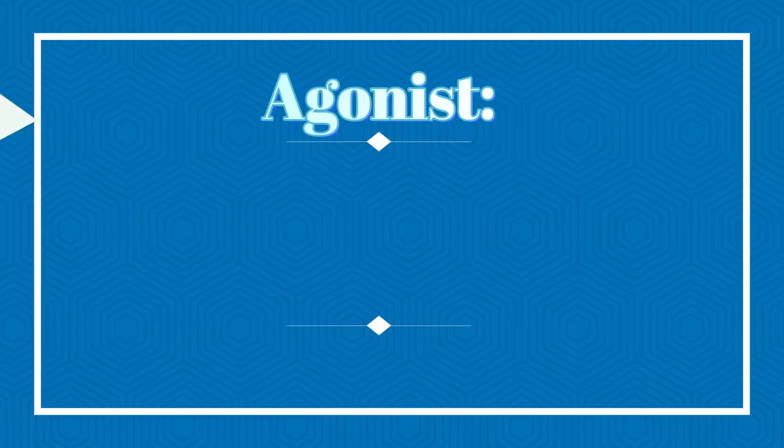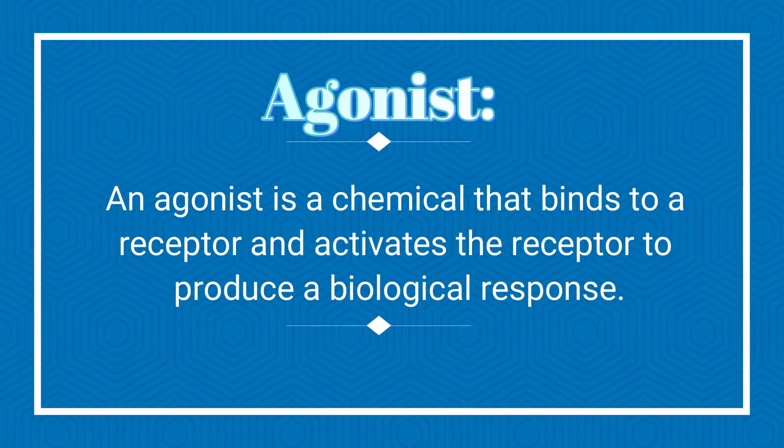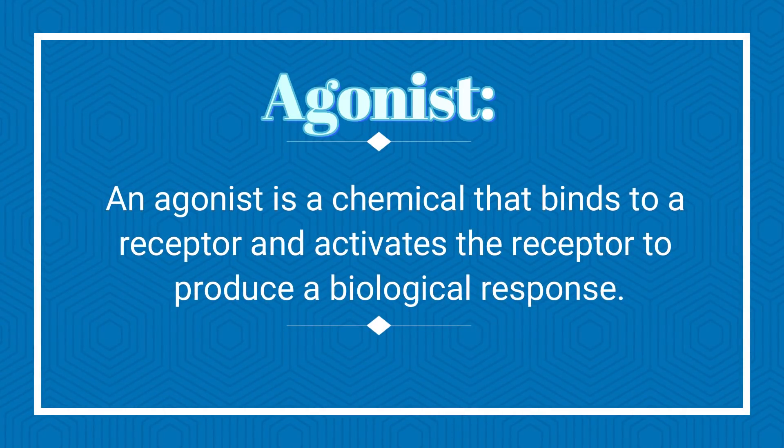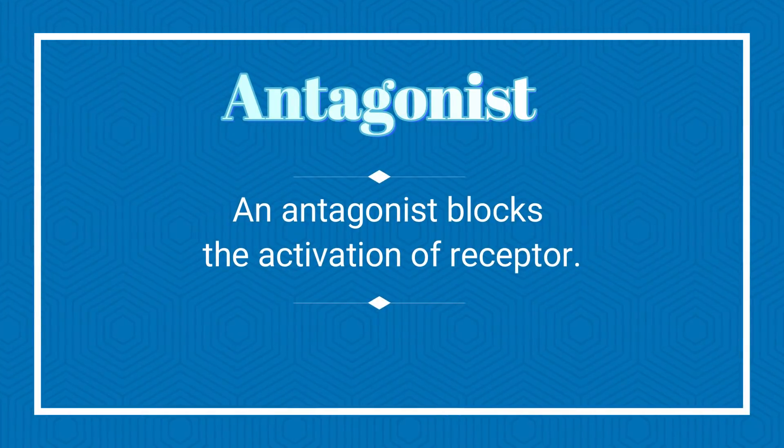These are very important terms, so let me take a moment to explain them. An agonist is a specific type of drug that produces a certain predicted action when it binds to the correct receptor, meaning it mimics the action of the cell it binds to. The antagonist is the type of drug that prevents the activation of the receptor — its function is to prevent the action of another substance rather than to produce its own effect.